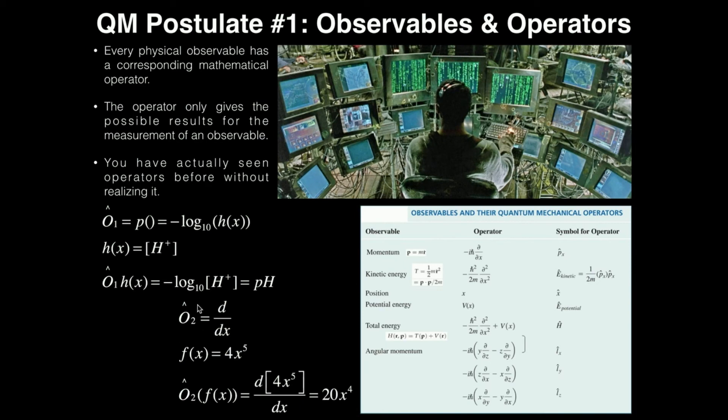Now, other operators, common ones that we'll see are actually derivatives. You can see up here that we have several derivatives. We have momentum, which is the first derivative. Kinetic energy is the second derivative. And then all the angular momentums are going to involve first order partial derivatives. So let's define a second operator, operator 2 is going to be the first derivative with respect to x.